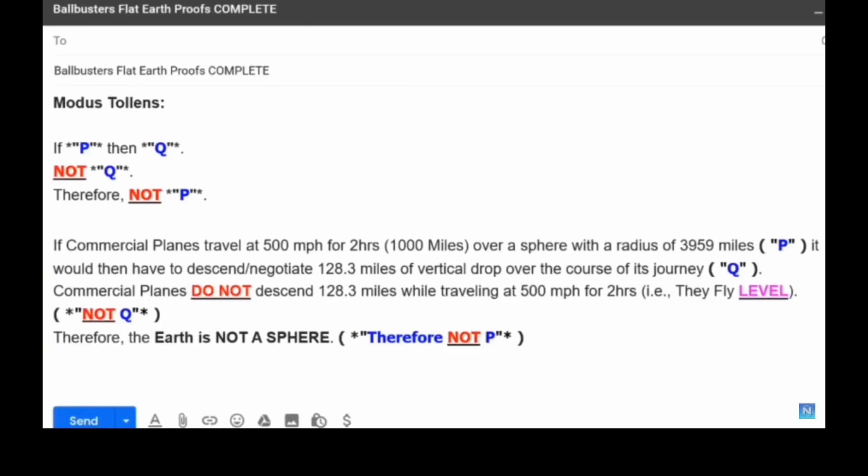If commercial planes travel at 500 miles per hour for two hours, that's 1,000 miles, over a sphere with a radius of 3,959 miles (P), it would then have to descend and negotiate 128.3 miles of vertical drop over the course of its journey (Q). Commercial planes do not descend 128.3 miles while traveling at 500 miles for two hours, that is they fly level (not Q), therefore the Earth is not a sphere (therefore not P).